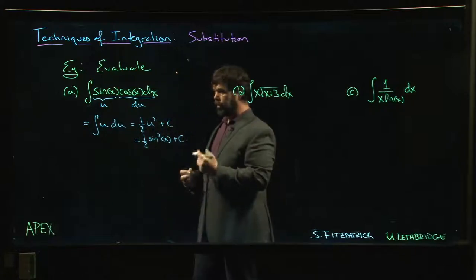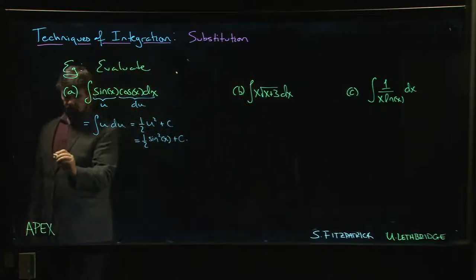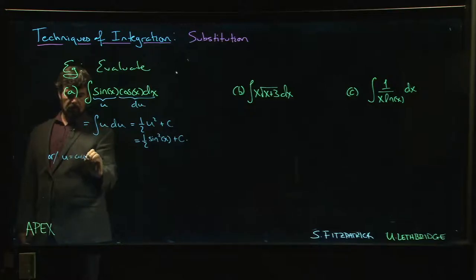There's one other thing that's interesting with this one though - it's not the only way we could have solved it. We could have also done u equals cos x, du is minus sine x dx.